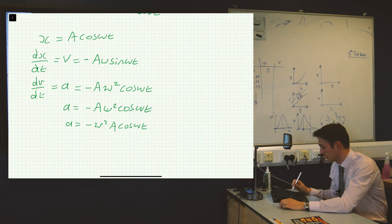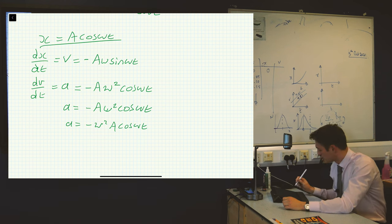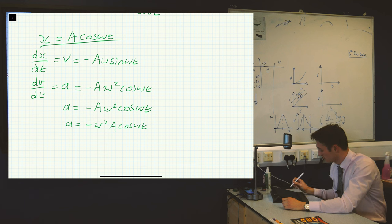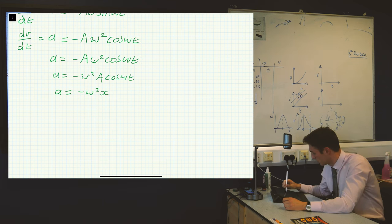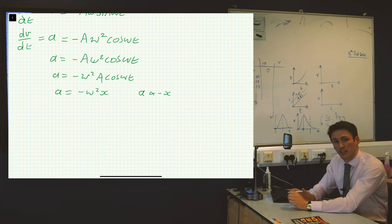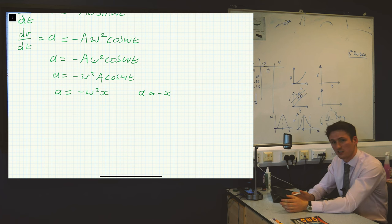Now A cosine omega t is what we earlier defined to be displacement x. So we can substitute A cosine omega t for x, and we end up with: acceleration equals minus omega squared times x. And this makes sense because we know acceleration is proportional to minus x.